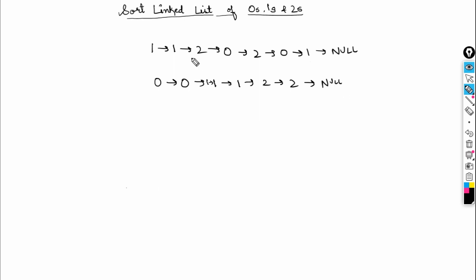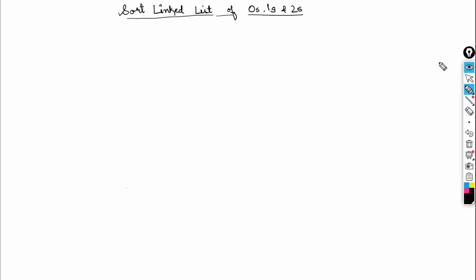Basically, we'll be given an unsorted linked list of zeros, ones, and twos and we need to sort it. We know that all the zeros will come in front, then all the ones in the middle, and all the twos at the end of the list. Let's discuss how we can do that.